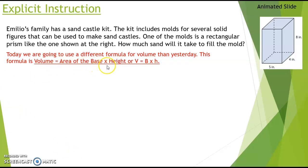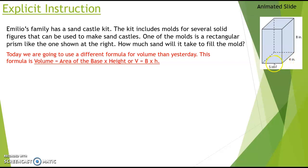This formula is: volume equals the area of the base times the height. In other words, V equals B times h, where B means the area of the base. Remember from yesterday, the area of the base is the length times the width of the base of the rectangular prism. So in this case, the area of the base would be five times four.